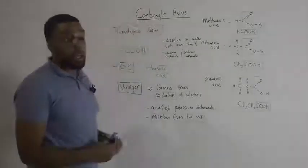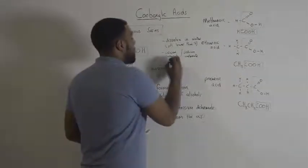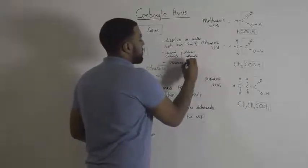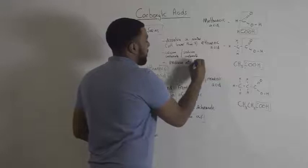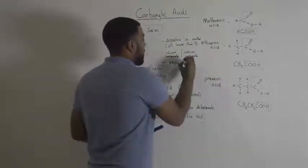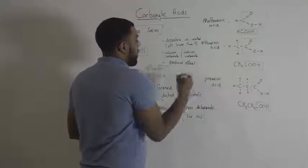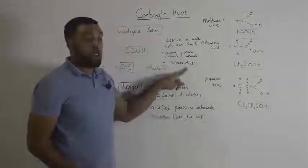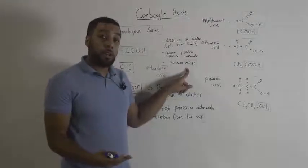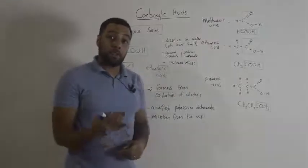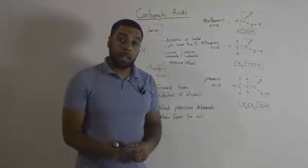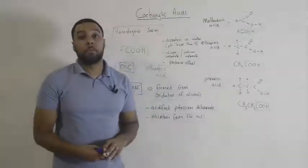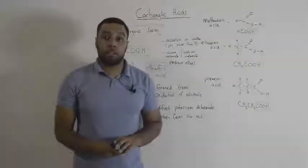We can also use carboxylic acids to produce esters. Esters are produced when we react a carboxylic acid with an alcohol in the presence of a strong acid catalyst. We will look at esters in our next video. Okay guys, thanks for tuning in.